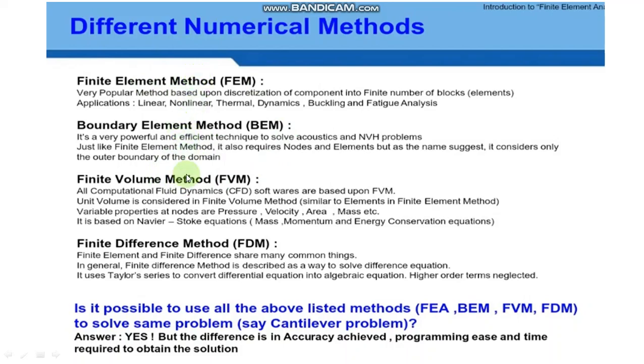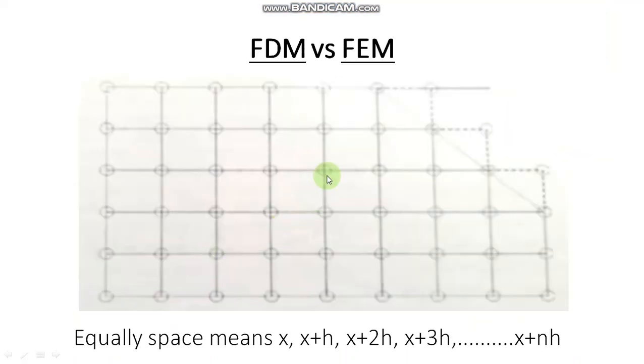The next method that we use is Finite Volume Method. In books, they call it Control Volume Method. So in Finite Difference Method, FDM, we actually use values at every node. We use values at this node, and this node, and this node. That's what we do in FDM approach. We calculate sometimes temperature at any point with respect to delta T by delta X.